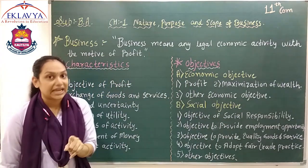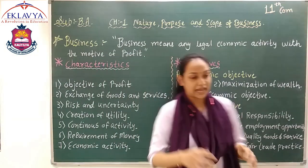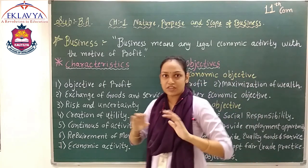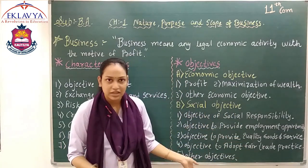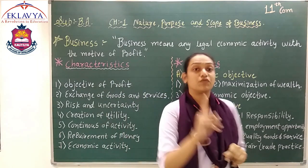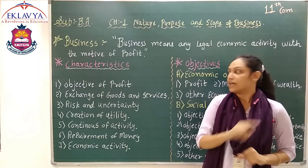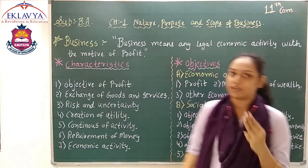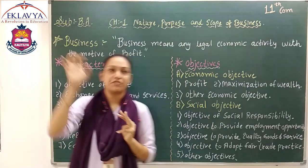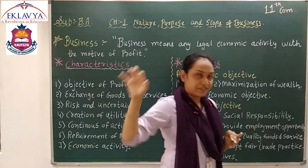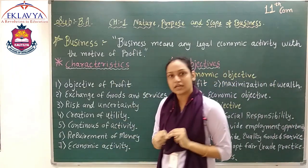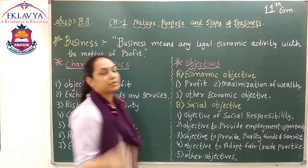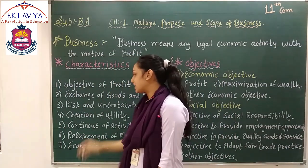The third is creation of time utility. Some products are seasonal and will not sell in the market all year round — they need to be stored until the right season. For example, firecrackers are only sold during Diwali; in January, nobody buys them. So you store them and sell when there is demand. To summarize: first is form — converting raw material into finished goods; second is place — taking the product from factory to market; and third is time — storing the product until the right selling season.